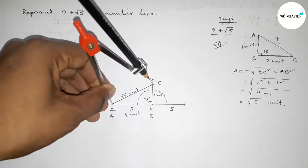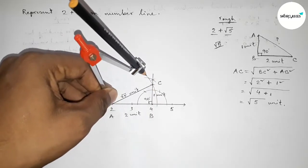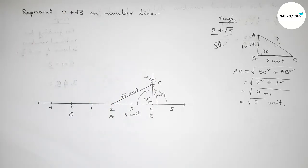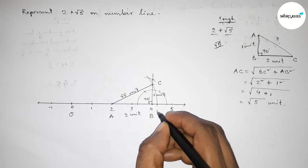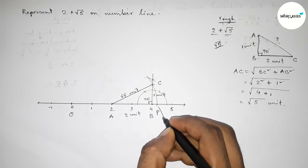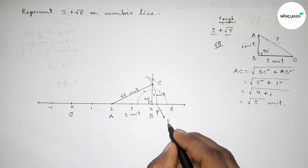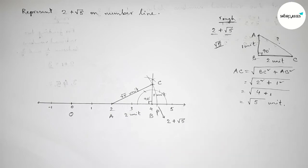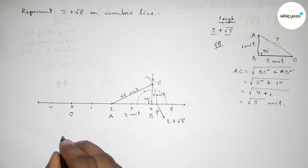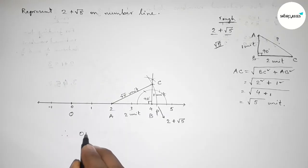Now taking the length AC using compass and drawing an arc through point C which meets the number line at a point P. The arc meets here at point P. So taking point B, this distance is 2 plus root 5 on the number line.